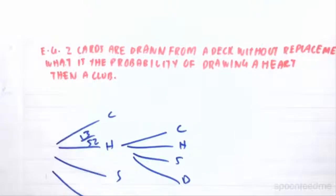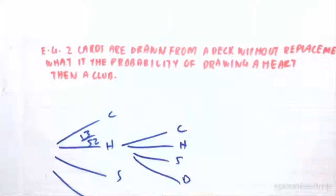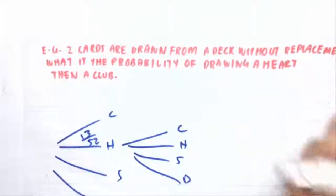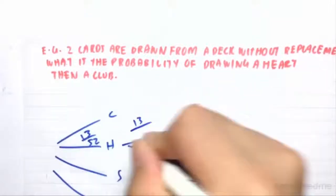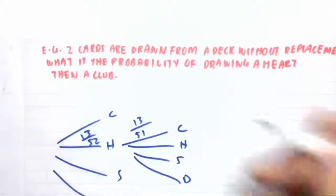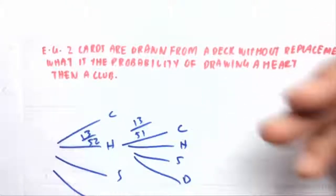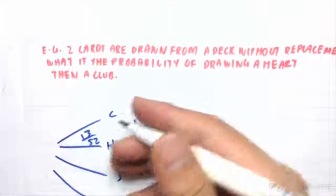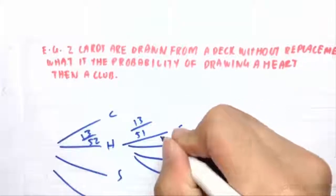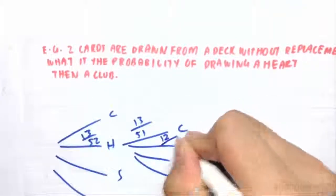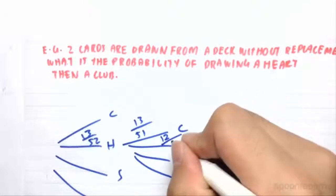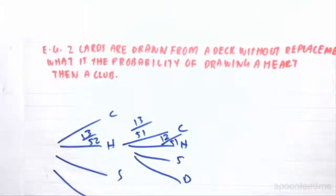And then after, because there's no replacement, there's only 51 cards left, so the probability of drawing a club actually increases. So there's 13 clubs left, and there's only 51 cards left in the deck, so the probability of drawing a club increases, but the probability of drawing another heart decreases, because there are only 12 hearts left out of the 51 cards left in the deck.